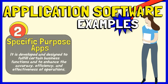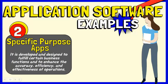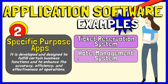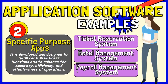Second, specific purpose application software. These are types of software that are customizable and mostly used in real-time or business environments. They are developed and designed to fulfill certain business functions and to enhance the accuracy, efficiency, and effectiveness of operations. Some examples are Ticket Reservation System, Hotel Management System, and Payroll Management System.